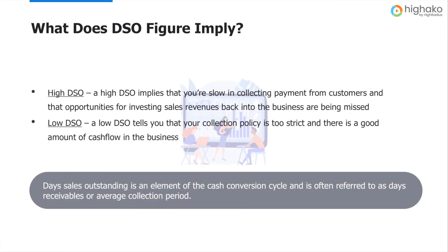A high DSO implies that you are really slow in collecting payments from your customers, meaning your outstanding receivables are more than the sales you have made. If this continues, you might have to borrow money to run your business. Whereas a low DSO implies that you have a good collection policy and decent cash flow. However, if DSO is too low, this might mean you are not making a good amount of sales based on the number of customers you have.